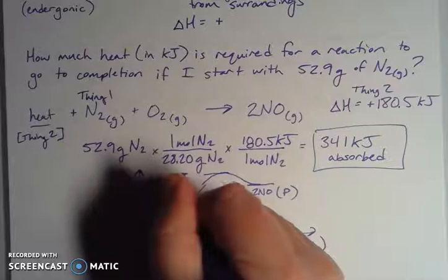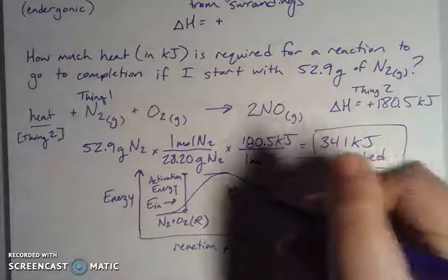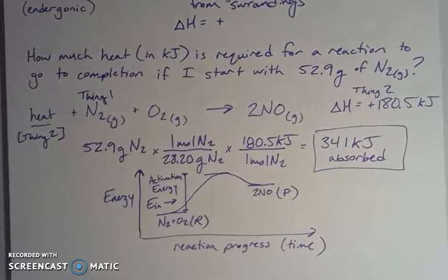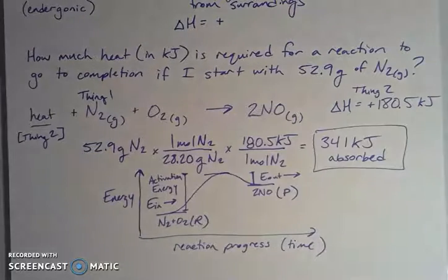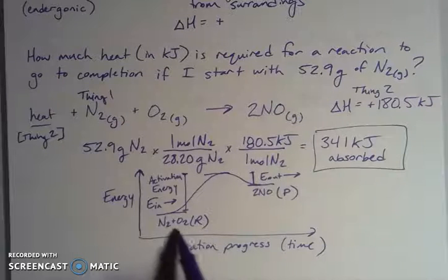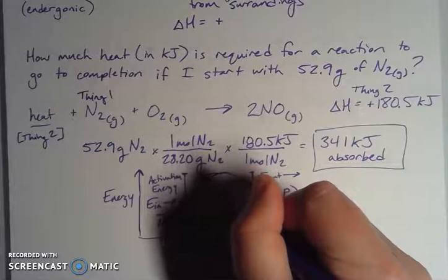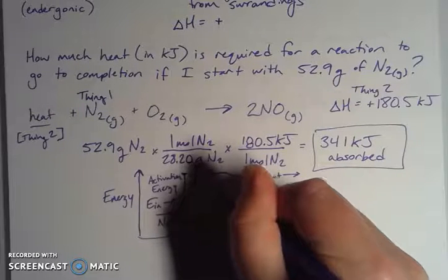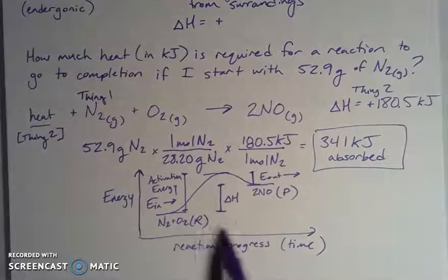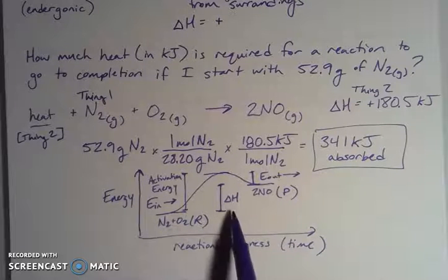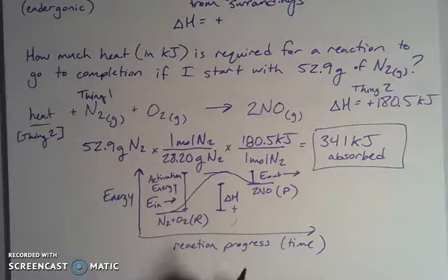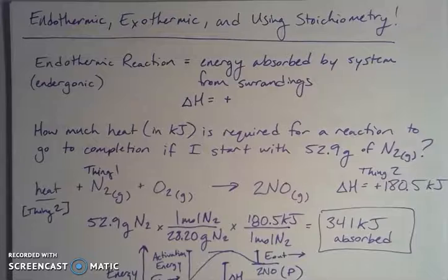So energy has to come in, and then on the downside there's energy that comes out — it's always good to produce products and you always get some amount of energy out. There's a balance between energy required into the system and energy out. The difference between the energies of my starting amounts and ending amounts — reactants to products — is my enthalpy, my delta H. This value is positive because the products are at higher energy than the reactants, confirming this is an endothermic process.